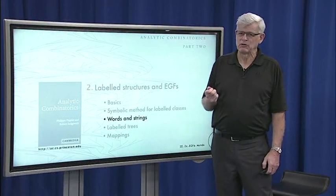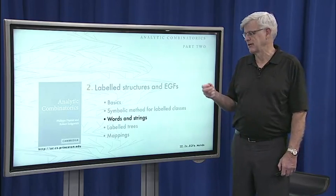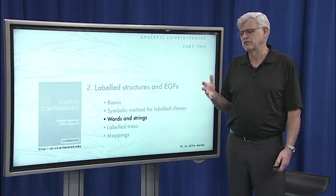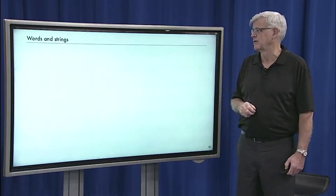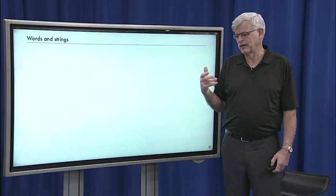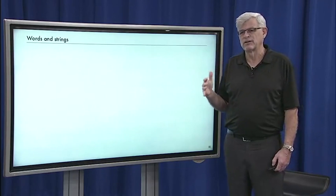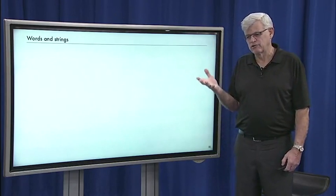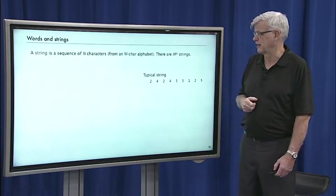Next, we're going to look at combinatorial constructions corresponding to labelled objects called words. These are another way to look at the strings we considered in the last lecture. There are many more details and motivating applications in part one of the course. In this part, we're going to focus on the math and analytic combinatorics to show that the symbolic method works for a broad variety of combinatorial classes.